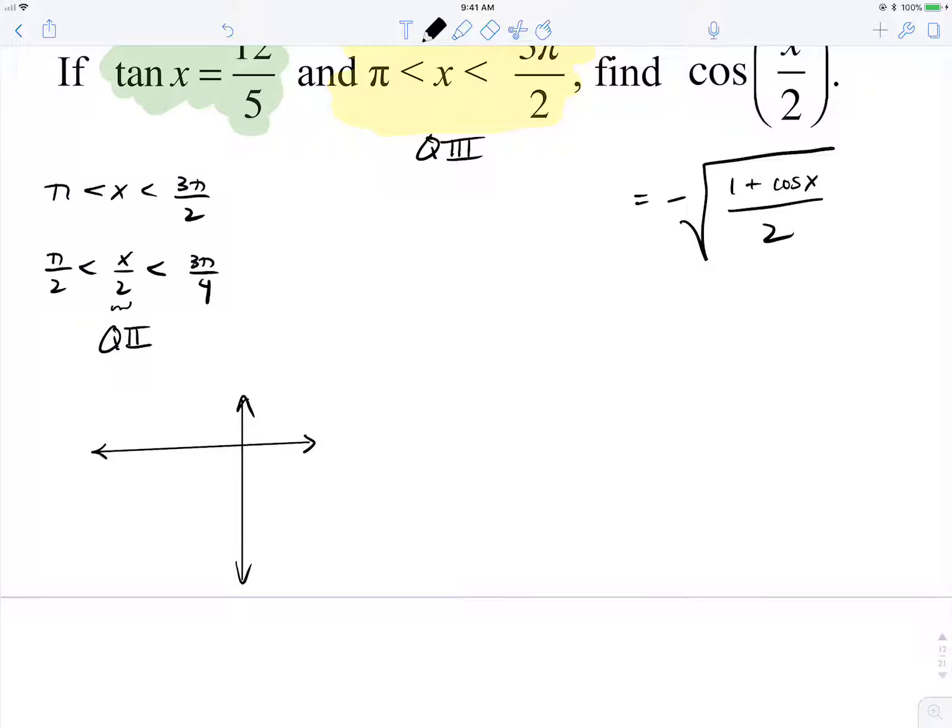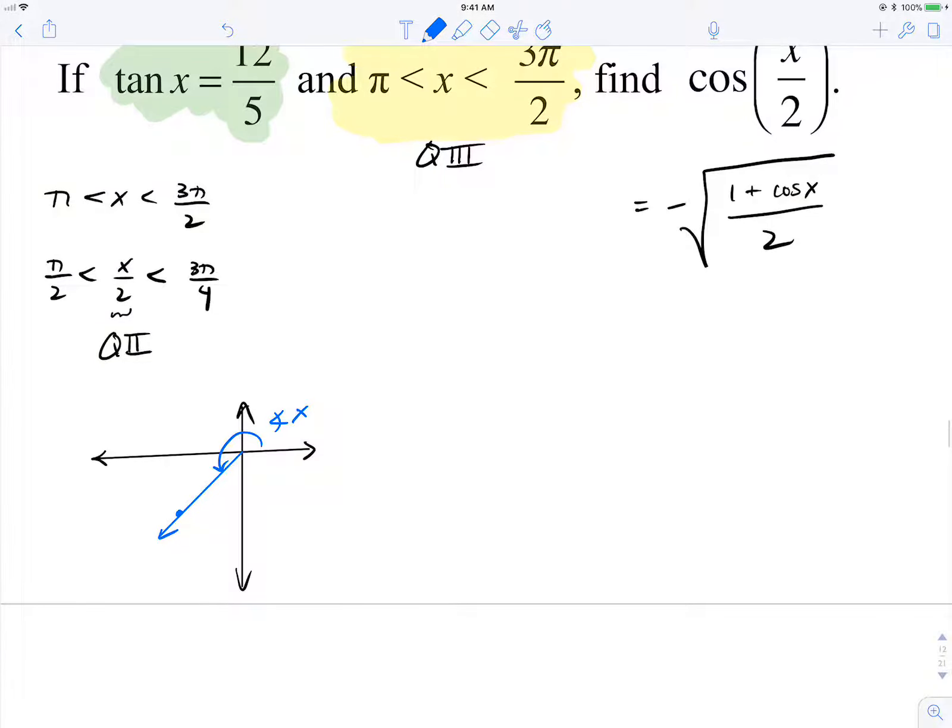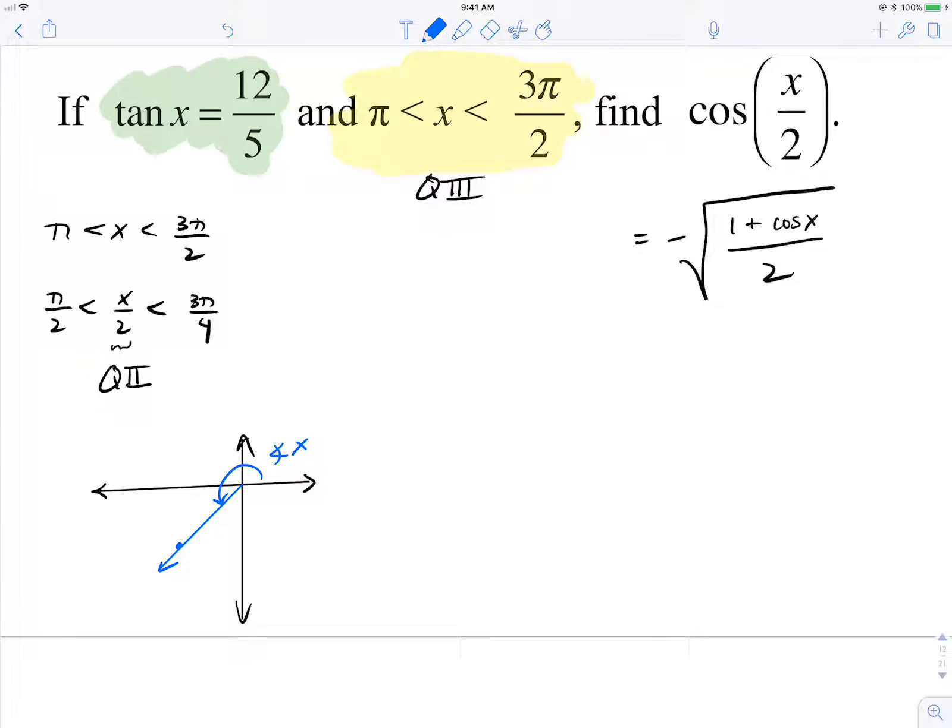I'm drawing a picture for angle x terminating in quadrant 3. Remember tangent is the ratio y over x. In quadrant 3, both x and y will be negative.